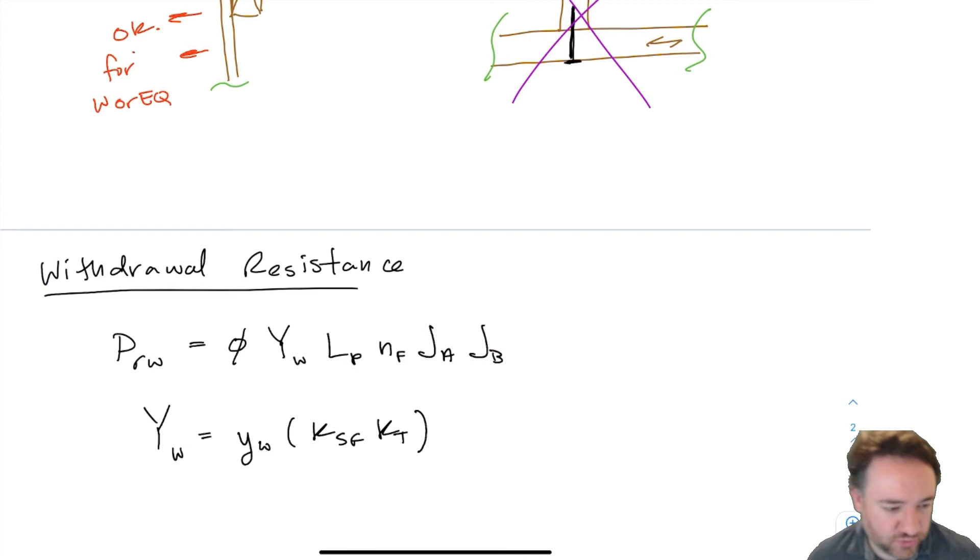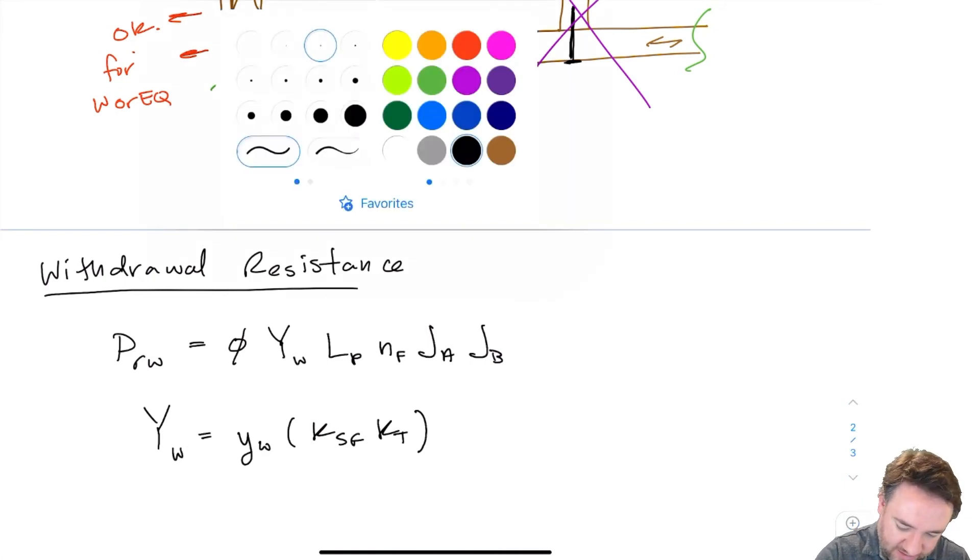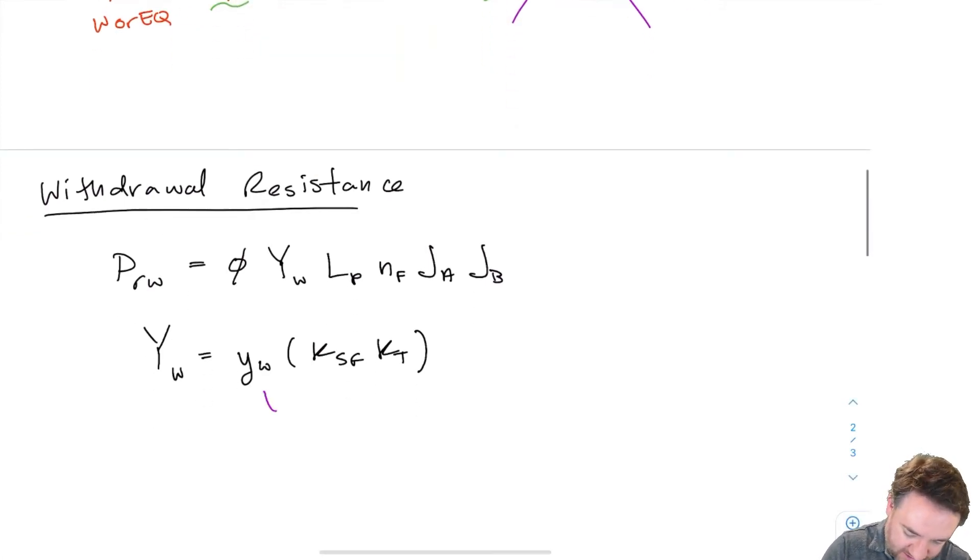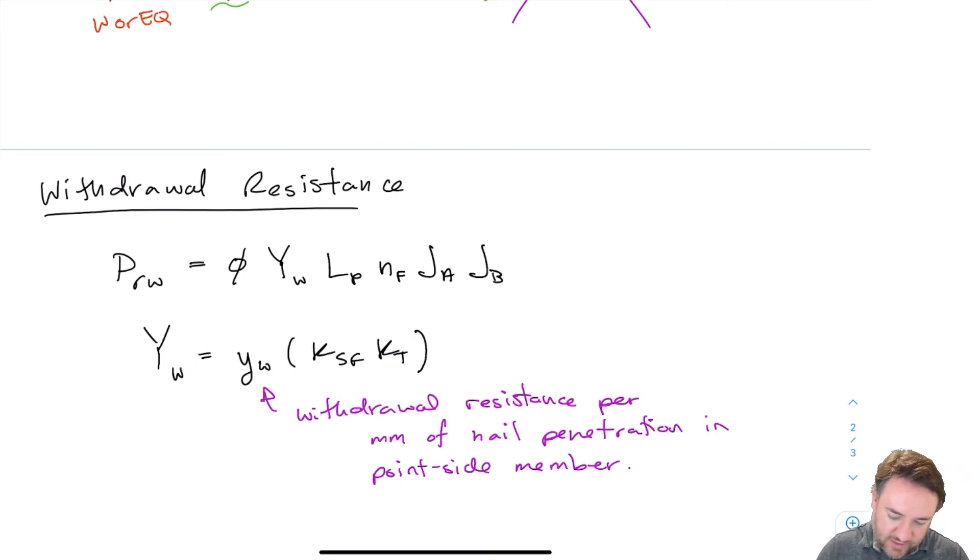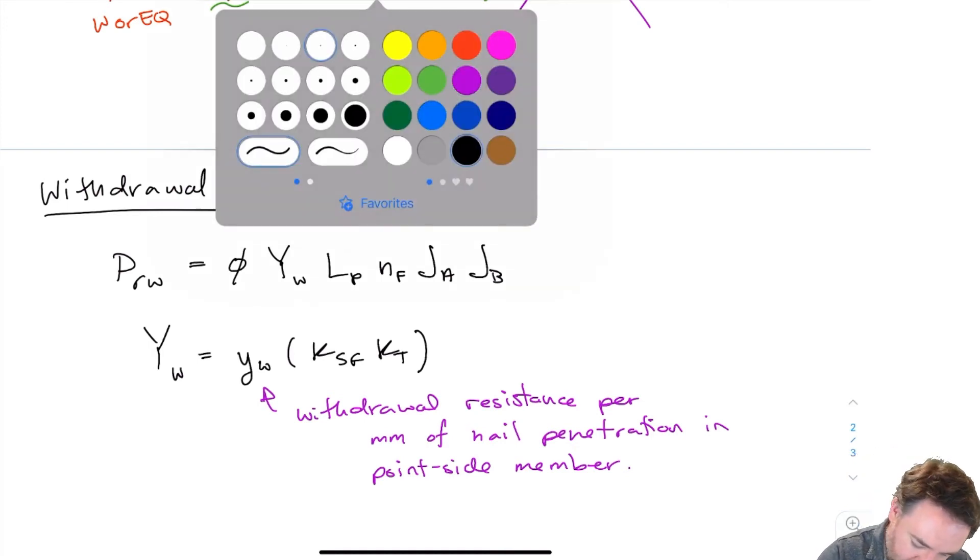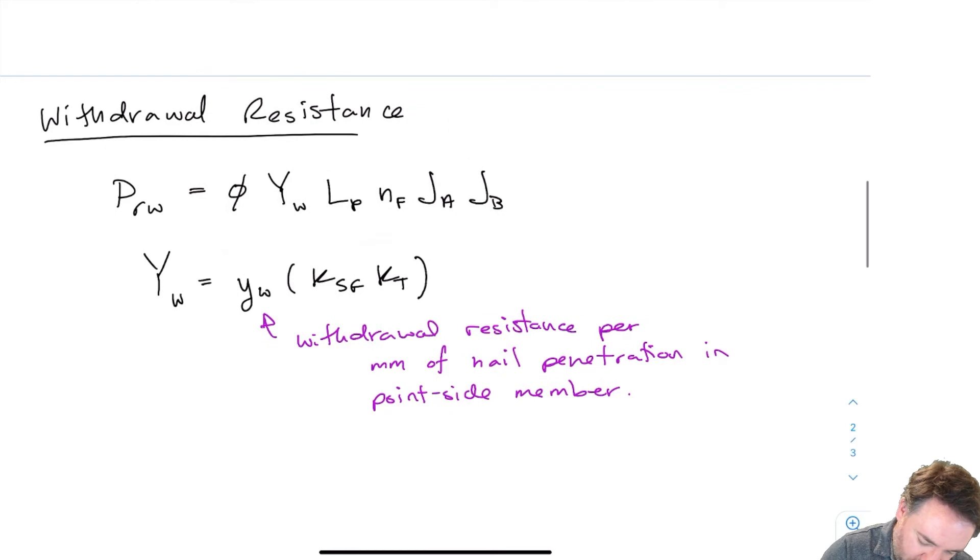And YW is basically given in a withdrawal resistance per millimeter. So this capital YW is just like our other unit strengths, it's a small yw times a KSF KT. So there's no duration factor here, this is only applicable to short duration loads. So there's no need to have a KD factor here. Okay so we have KSF KT and this here small yw is the withdrawal resistance per millimeter of nail penetration in the point side member so where that nail is embedded.